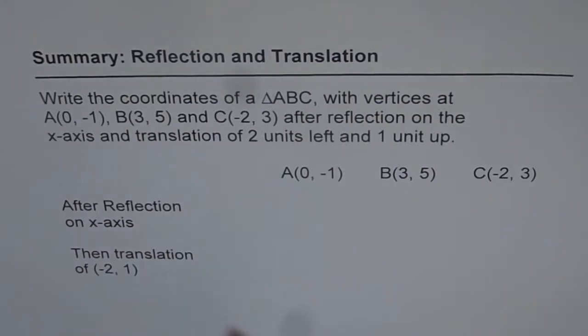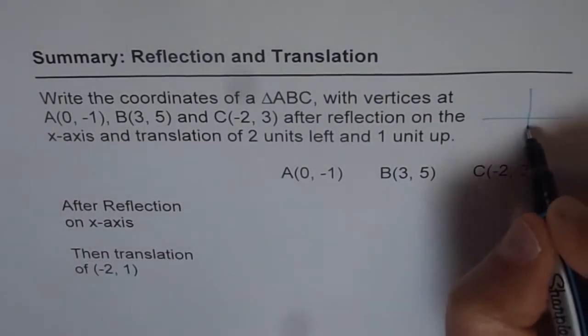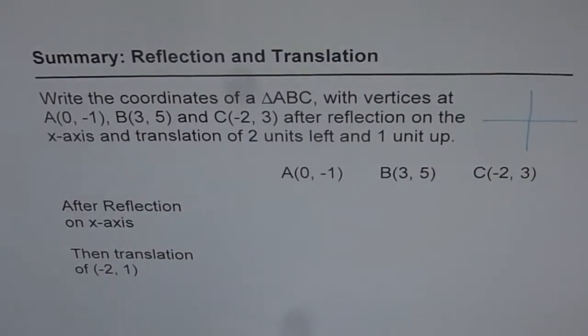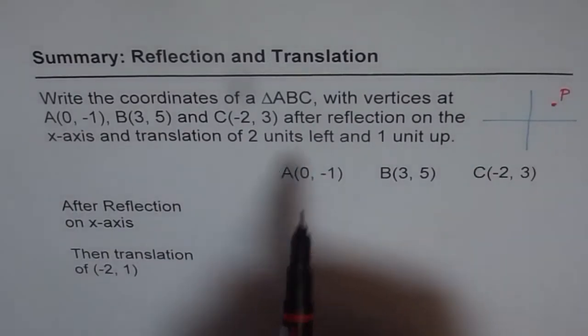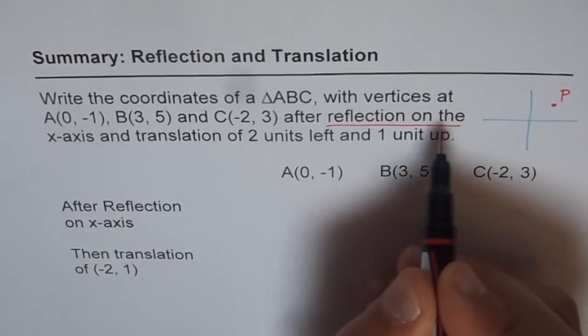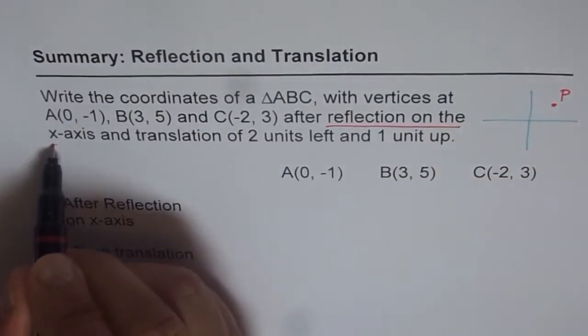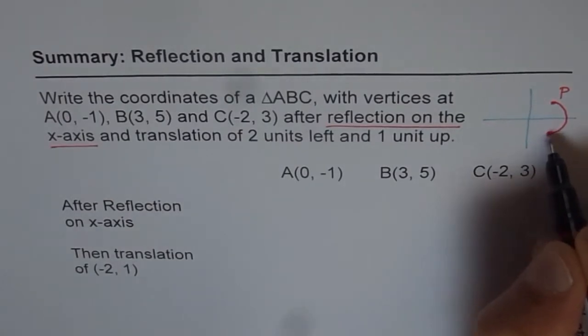So let us try to understand what we are trying to do here. Imagine this is our coordinate plane. So in this plane, we have a point, a point P here. Now to this point, we are saying reflection on x-axis. Reflection on x-axis means this point will come here. That is the reflection, and let us call this point as P'.